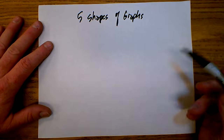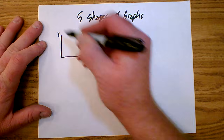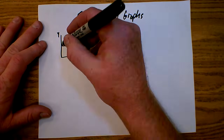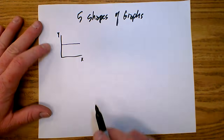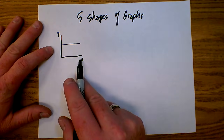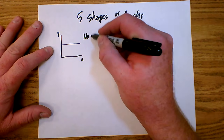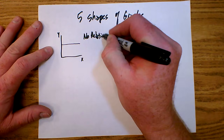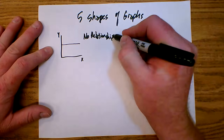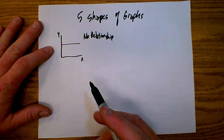As we look at the different shapes of graphs, the first type of graph we might find — I'm going to use the generic y and x here — is a horizontal line. In this graph, as x gets bigger, y is staying the same. There's no relationship at all. When there's no relationship, we could usually see that without even having to graph it, so we may not actually graph it.